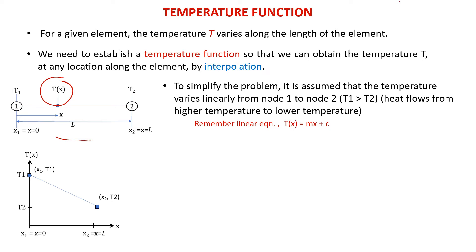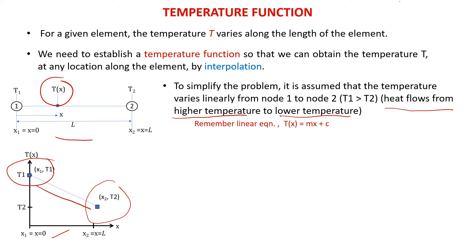To simplify the problem, it is assumed that the temperature varies linearly from node 1 to node 2, as shown in the figure. Remember, heat flows from higher temperature to lower temperature. That is why in this figure it shows that T1 is higher than T2. In order to obtain the temperature function, we need to get the equation of this line using the common linear line equation T equal to mx plus C.